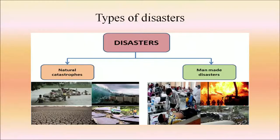Disasters can be of two types: natural disasters and manmade disasters. Natural disasters include flood, drought, cyclone, earthquake, tsunami, and cloudburst. Rail, road and air accidents fall under the category of manmade disasters.